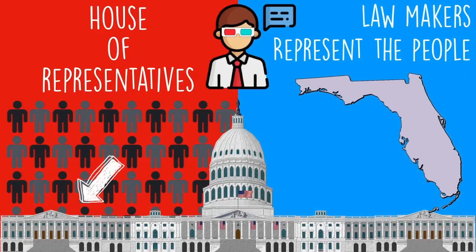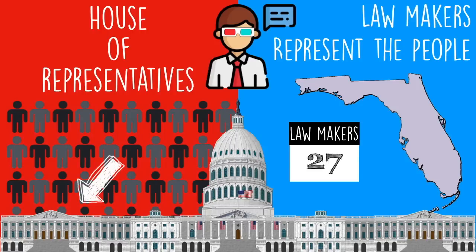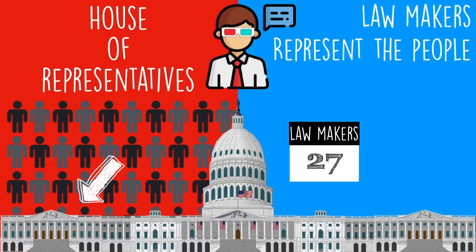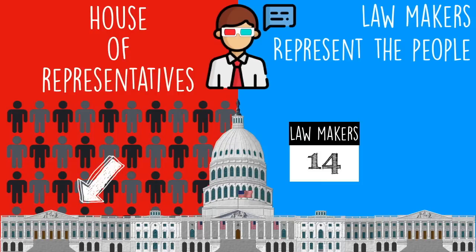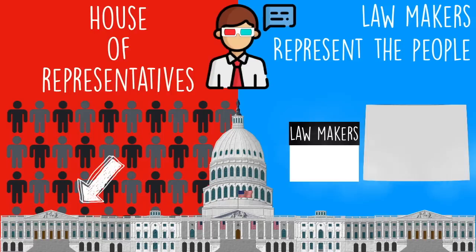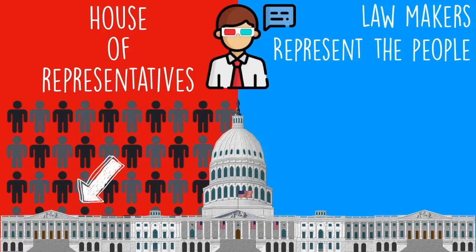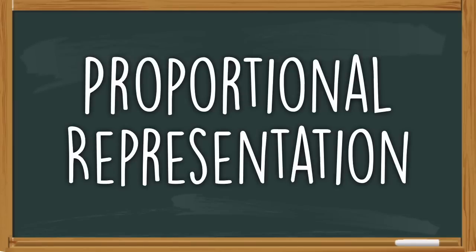Let's take a look at a couple of examples. Florida has a lot of people — they're in the top three in the United States — so they're going to get 27 representatives in the House. Georgia has a smaller population and so they receive 14 members of the House. And Wyoming has a very small population, so they're only going to get one representative in the House. We call this proportional representation, and this is a benefit for the states that have lots of people.